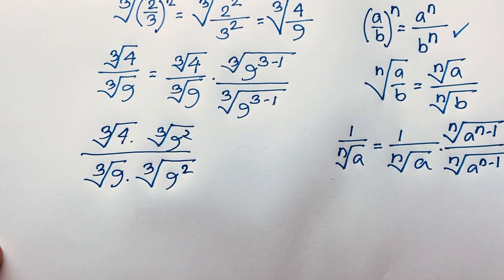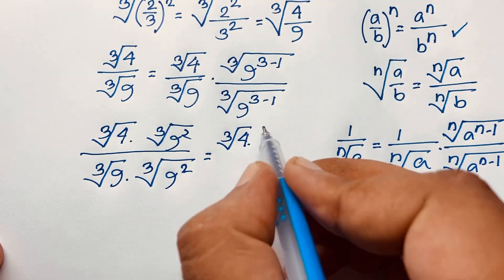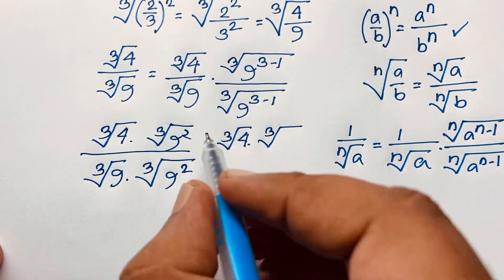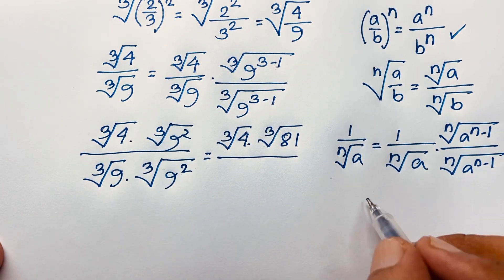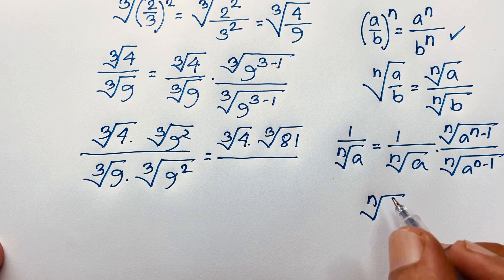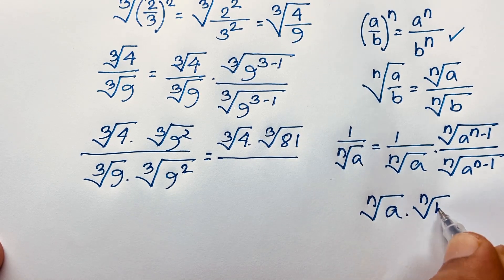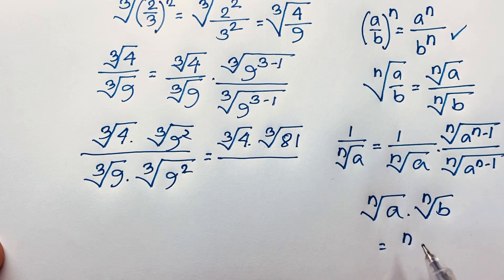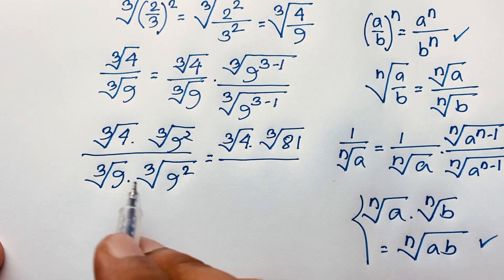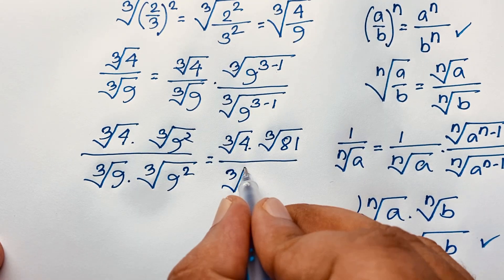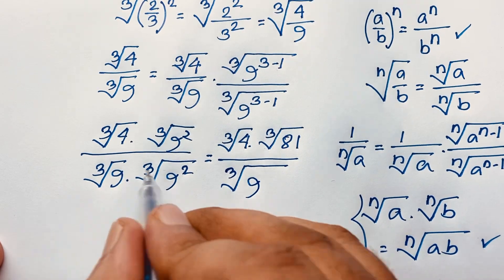Now, using the product rule for radicals — the n-th root of a to the power u times the n-th root of a to the power v equals the n-th root of a to the power u plus v — the denominator becomes cube root of 9 to the power 1 plus 2, which equals cube root of 9 to the power 3.